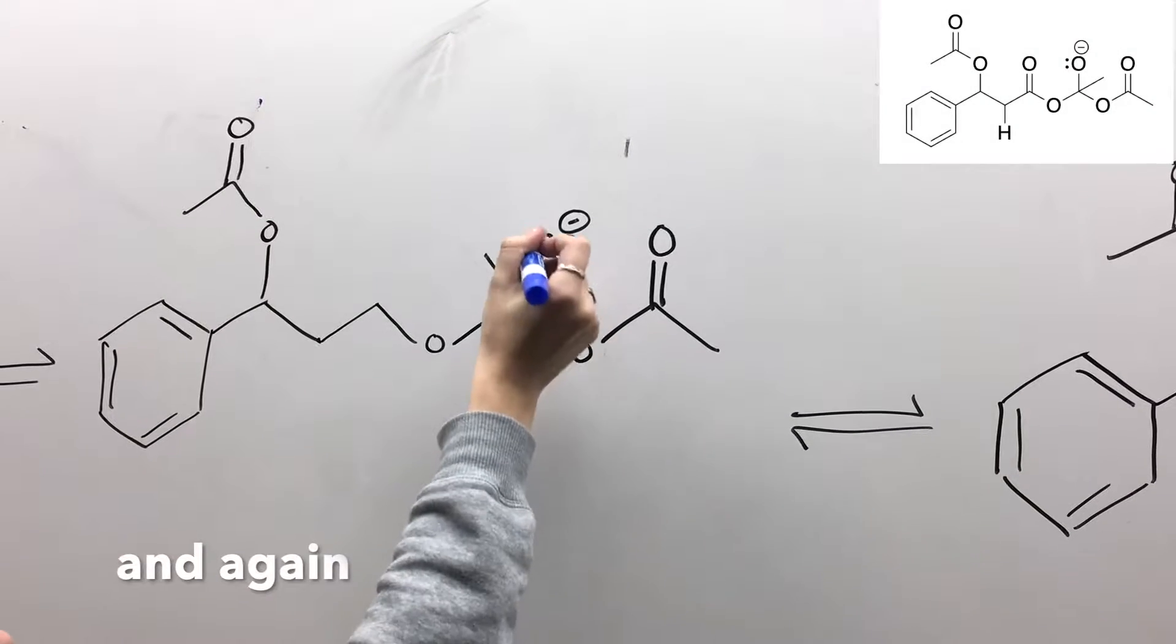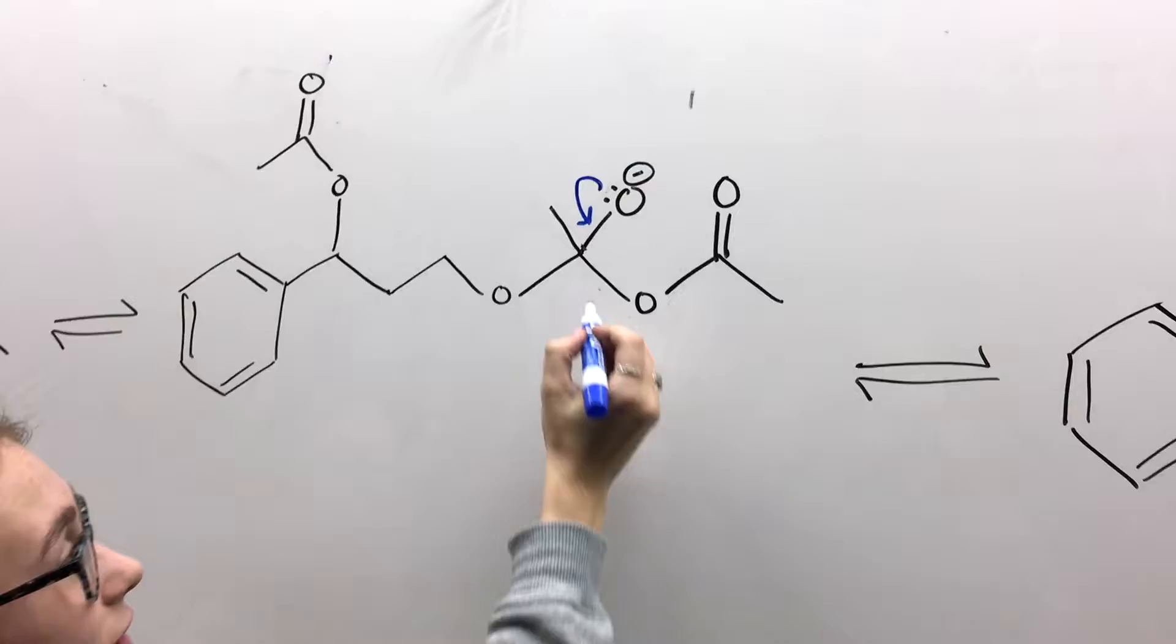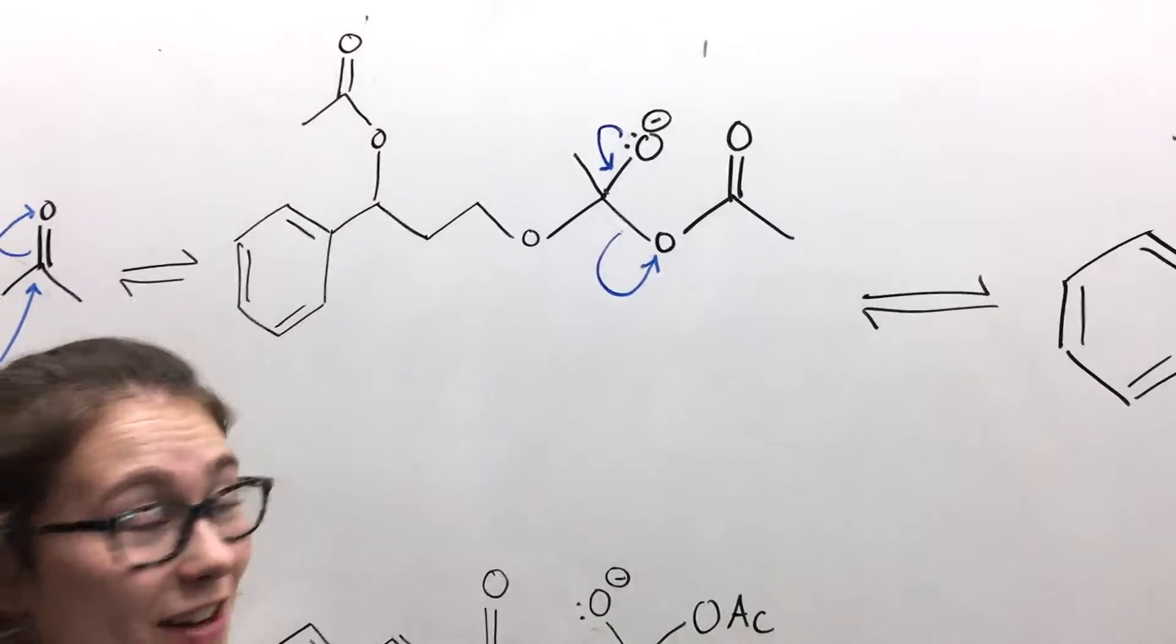So once again, this lone pair is going to move down and reform a carbonyl, and then these electrons will go onto the oxygen, causing the acetate ion to leave.